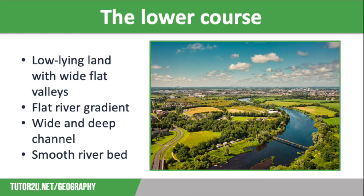The main fluvial process in the lower course is deposition. Fine sediment known as alluvium builds a floodplain when the river bursts its banks, and this is extremely fertile so it is good for crop growing. Landforms in the lower course include levees, floodplains, and estuaries or deltas.